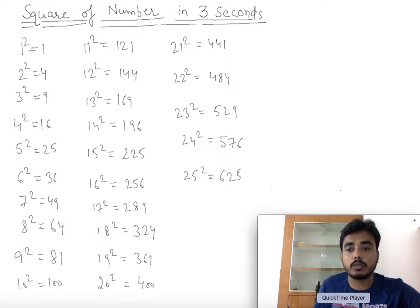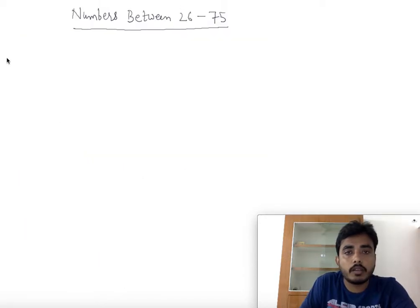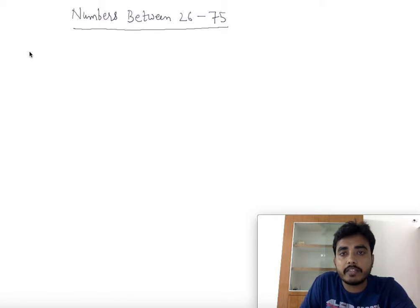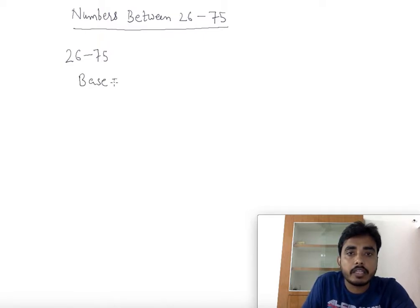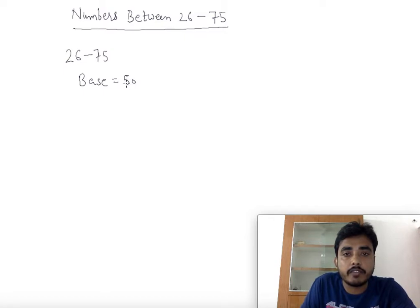Now let's see the squares of numbers between 26 and 75. For these numbers we need to take the base as 50 — we will check whether the number is how much lesser than 50 or how much greater than 50.